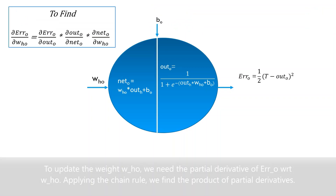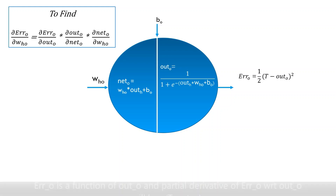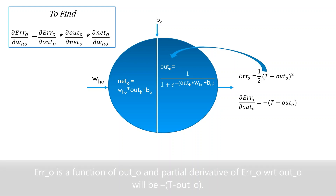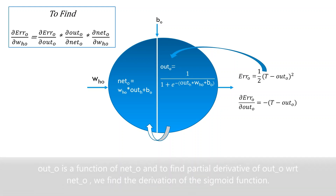To update the weight WHO, we need the partial derivative of error O with respect to WHO. Applying the chain rule, we find the product of partial derivatives. Error O is a function of outO, and the partial derivative of error O with respect to outO will be minus of (t minus outO). OutO is a function of netO, and to find the partial derivative of outO with respect to netO, we find the derivative of the sigmoid function.